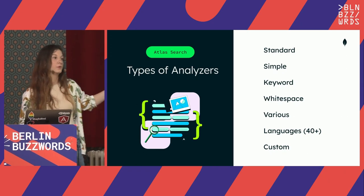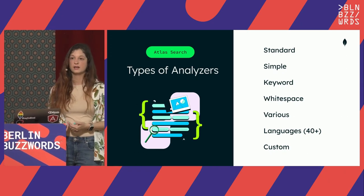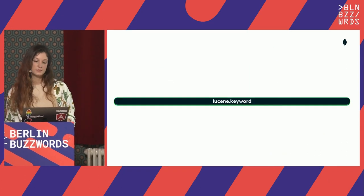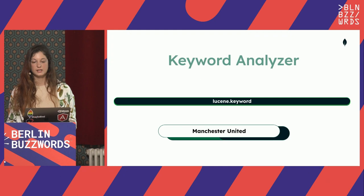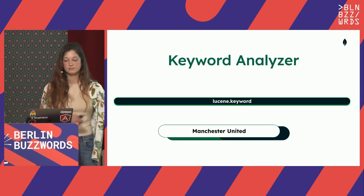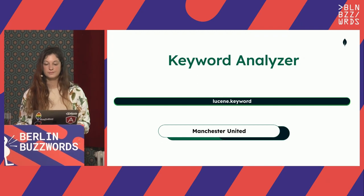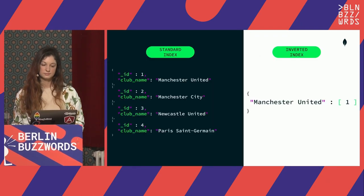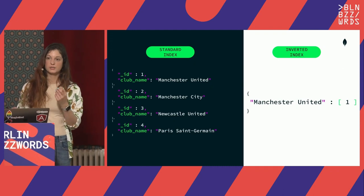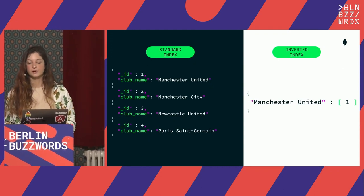When we send a query using 'Manchester' as text, first we go to the inverted index, find the values there — documents 1 and 2 — and then go to the standard index to find the actual documents. This is how it works under the hood. These are all the analyzers that Lucene supports, and they're also supported in MongoDB Atlas. For example, you can use the keyword analyzer to make sure the whole string stays together — 'Manchester United' will be just one token pointing to the concrete document.